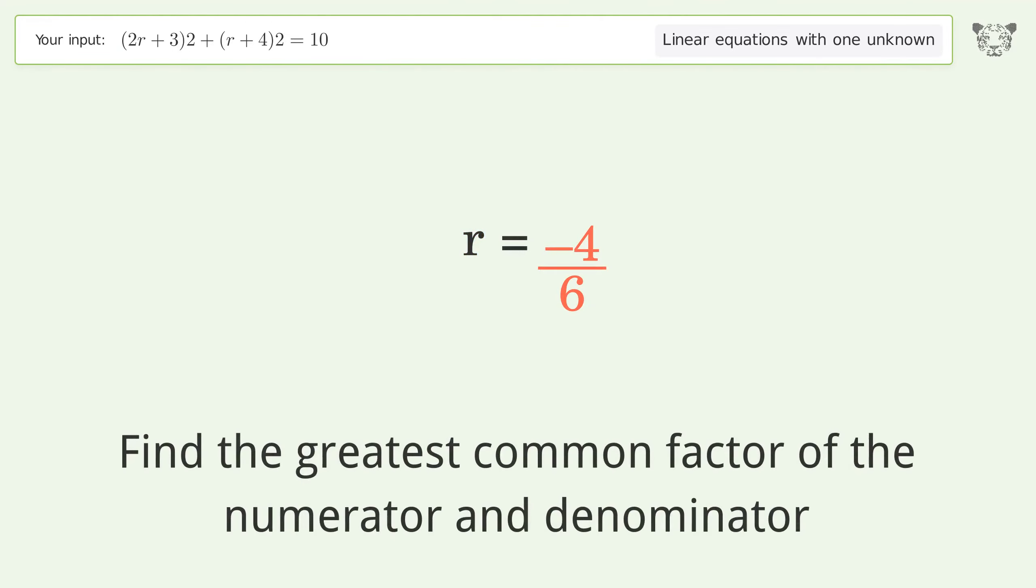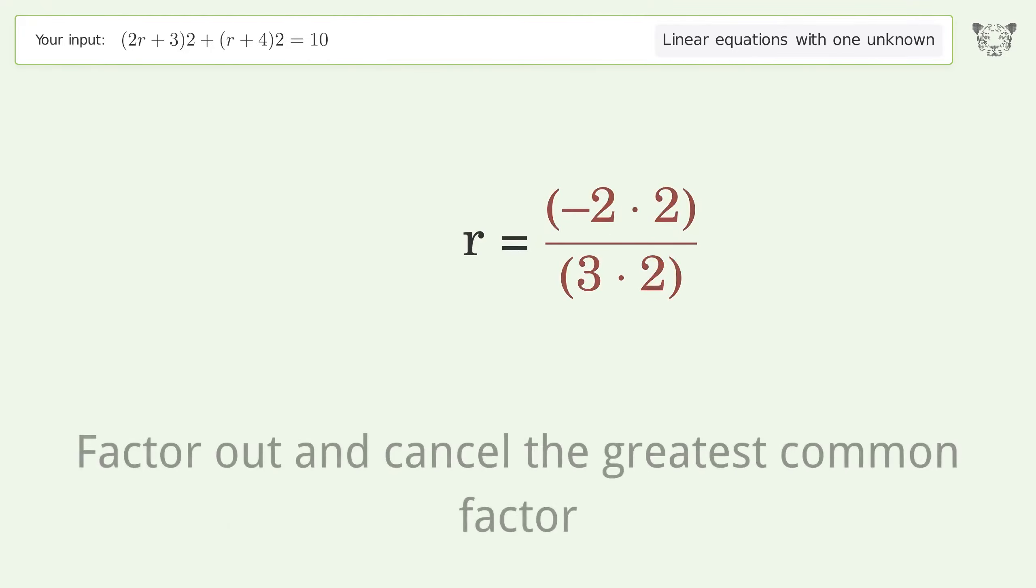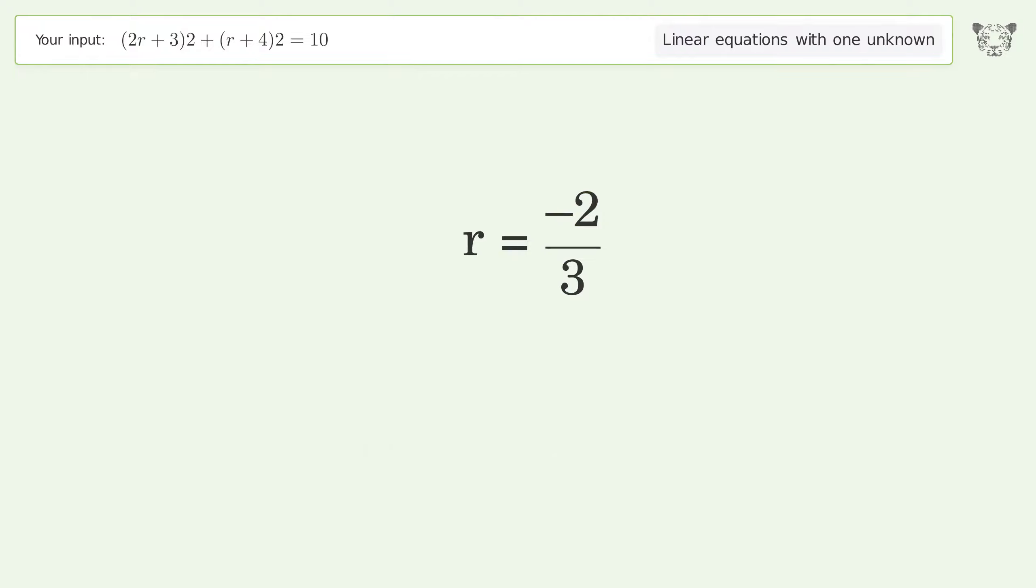Find the greatest common factor of the numerator and denominator. Factor out and cancel the greatest common factor. And so the final result is r equals negative 2 over 3.